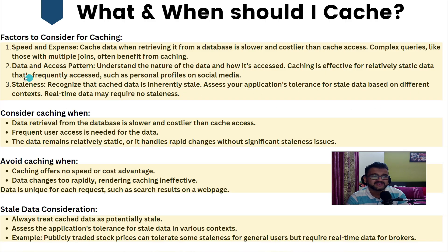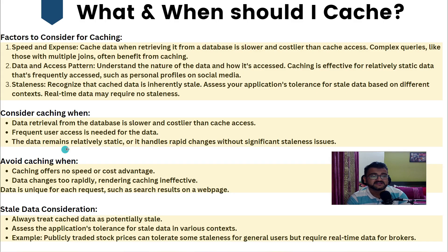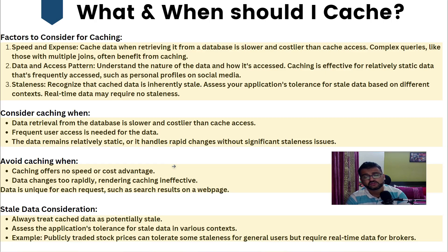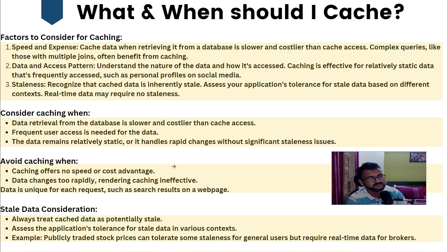Whatever you store in cache is generally static or stale in nature, so you need to understand what level of staleness your application can afford. Consider caching when data retrieval from the database is slower and costlier, frequent user access is needed, and data remains relatively static. Avoid caching when it offers no speed or cost advantage, when data changes too rapidly making caching ineffective, or when data is too unique per request.